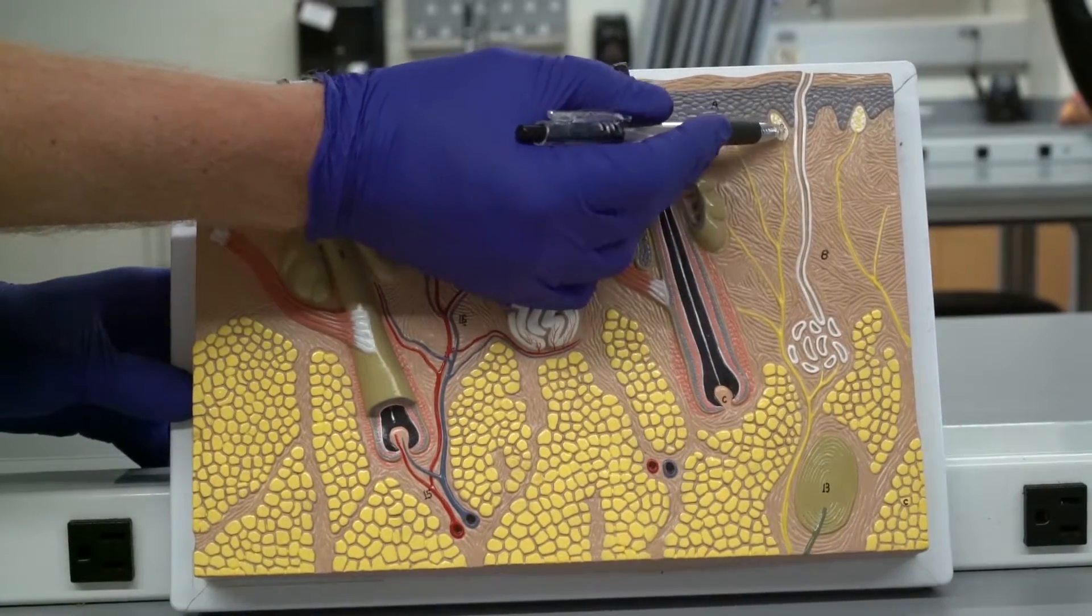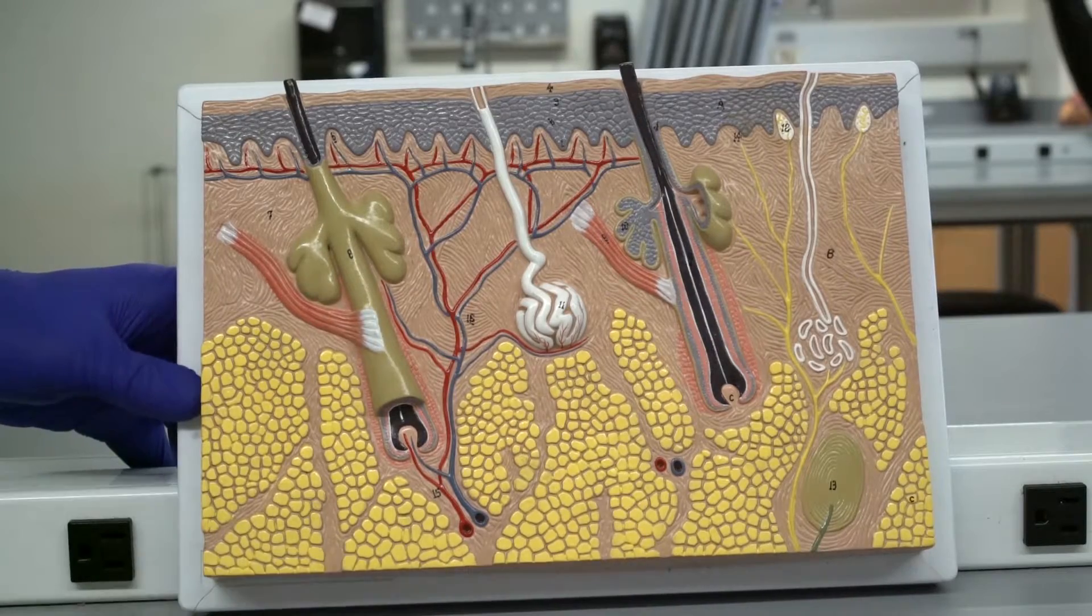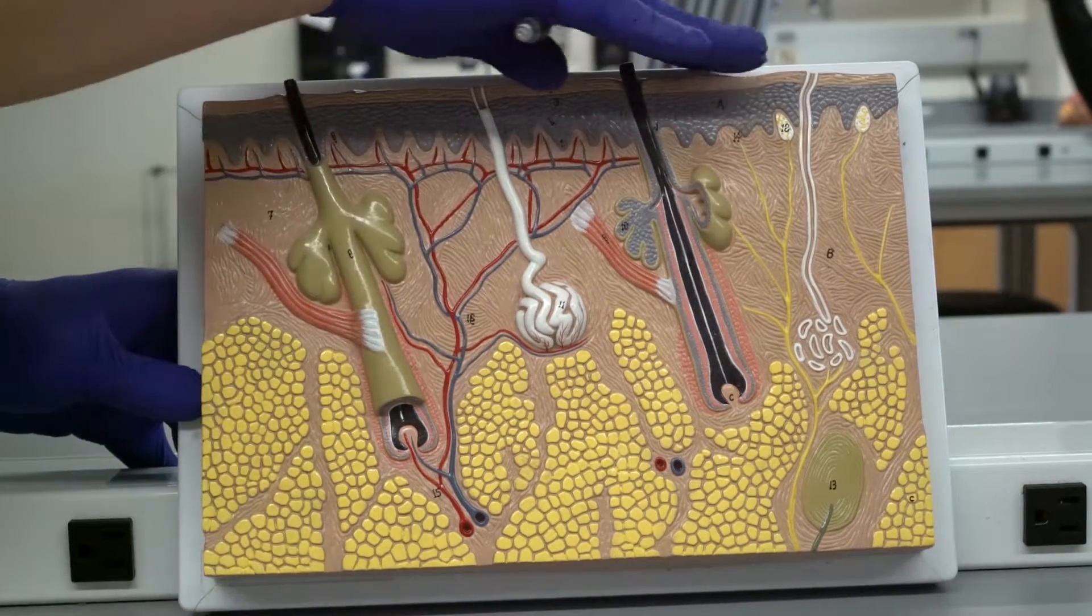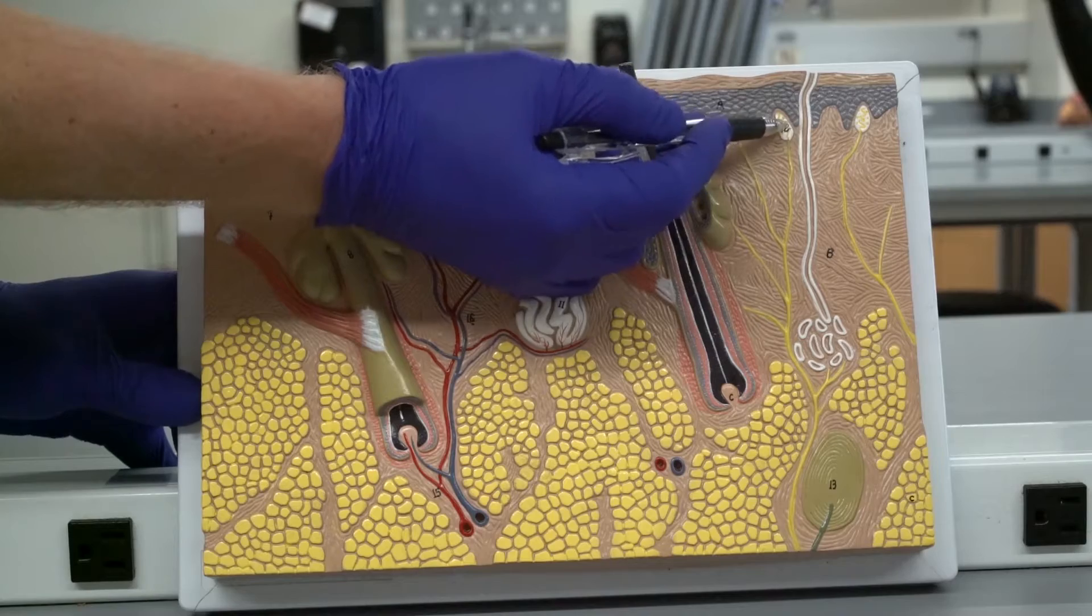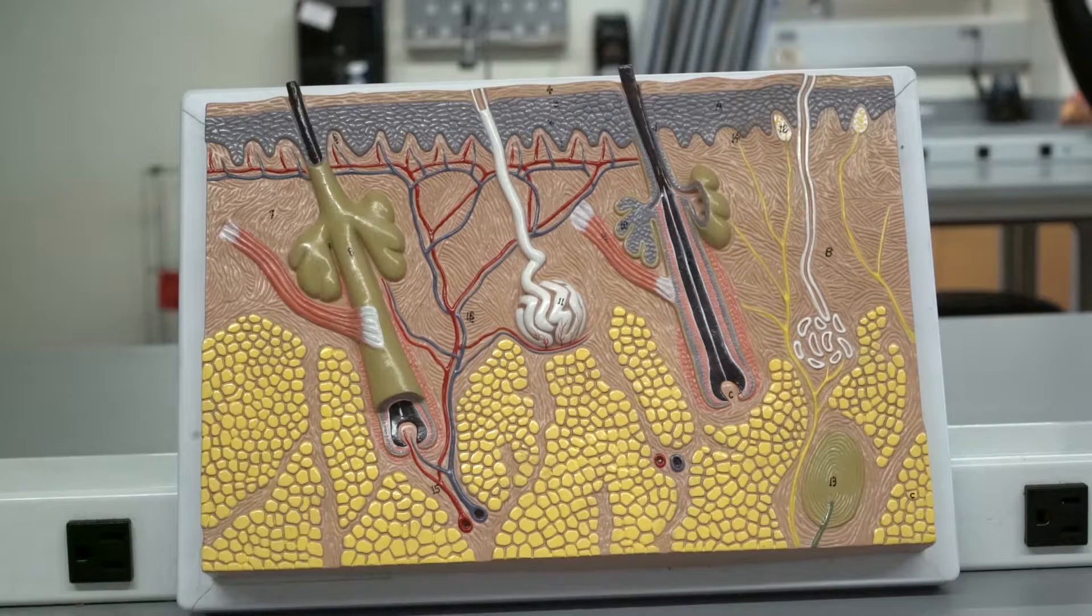Up here we have our Meissner or tactile corpuscle and this is used for light touch. It's up in the papillae in the skin and again it's related to its function. It's superficial because it's used for light touch.